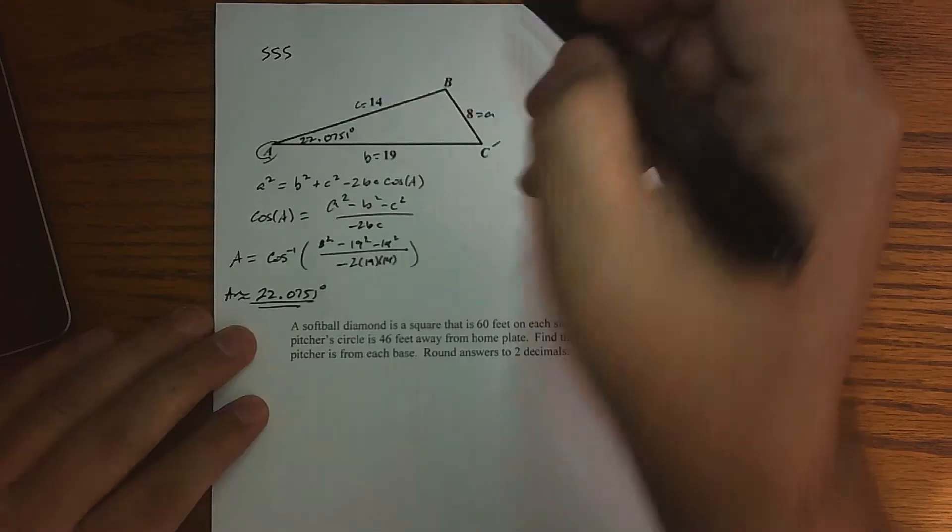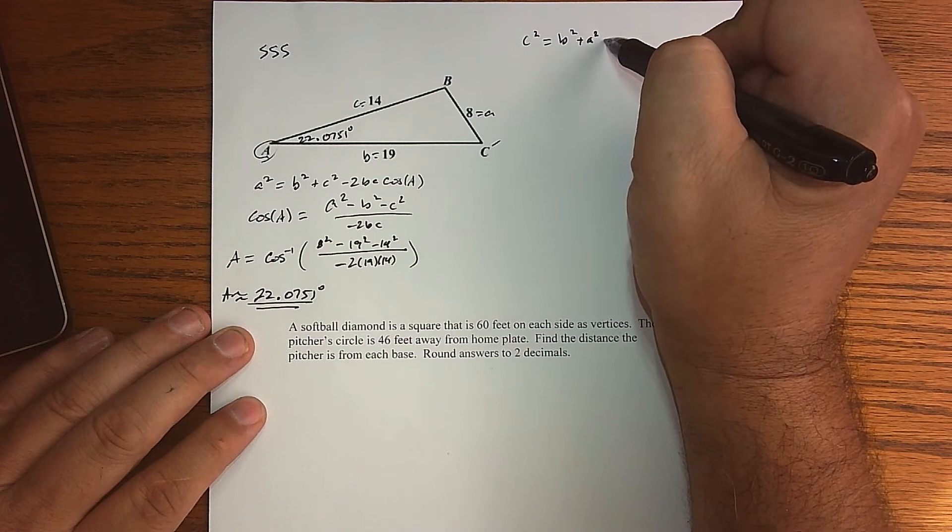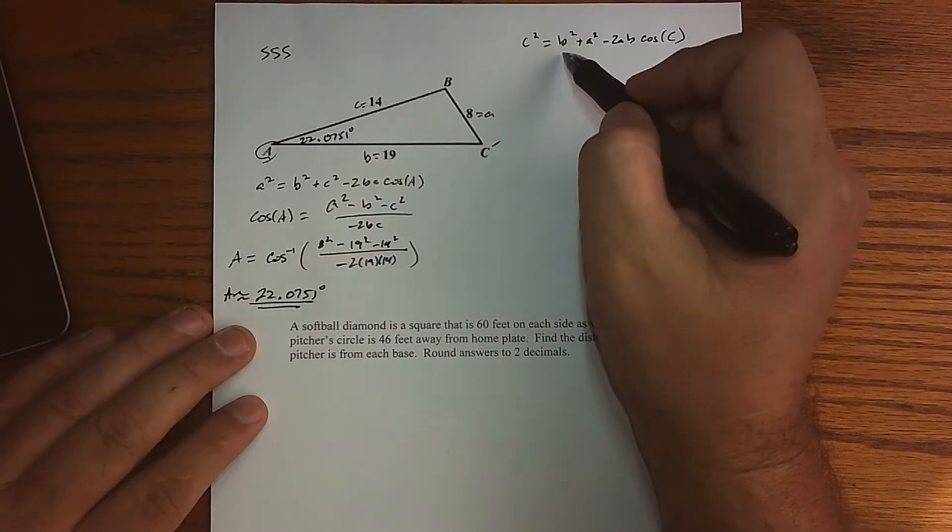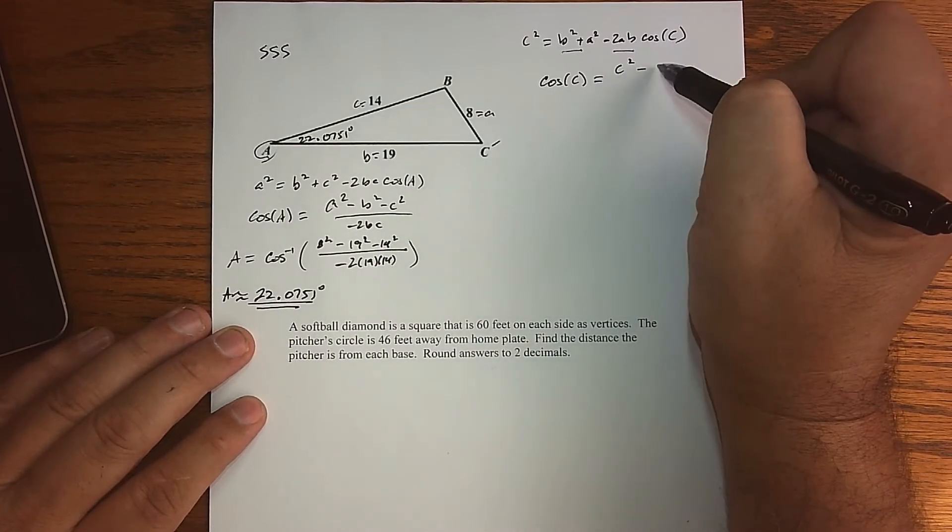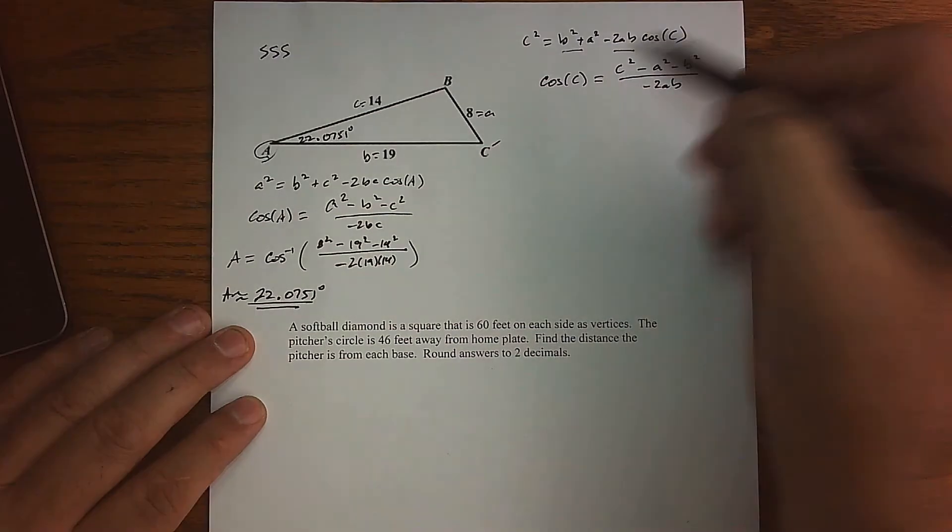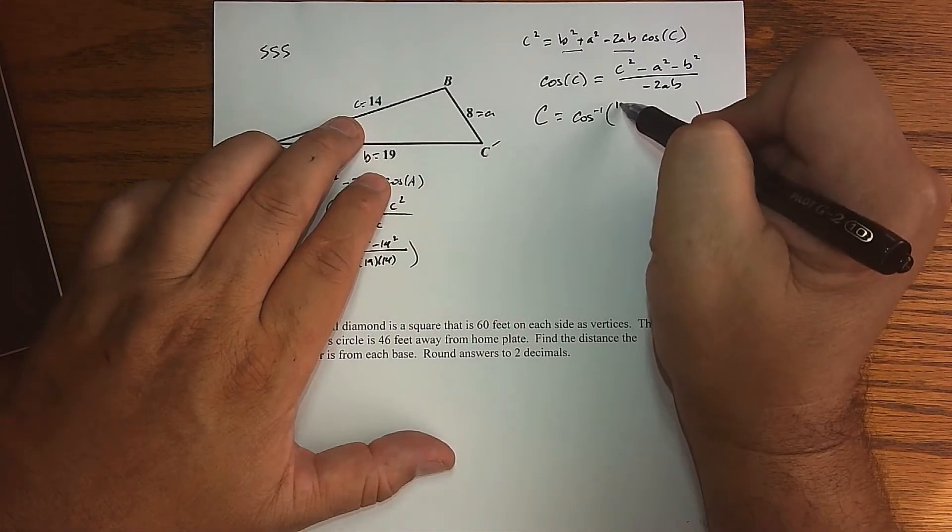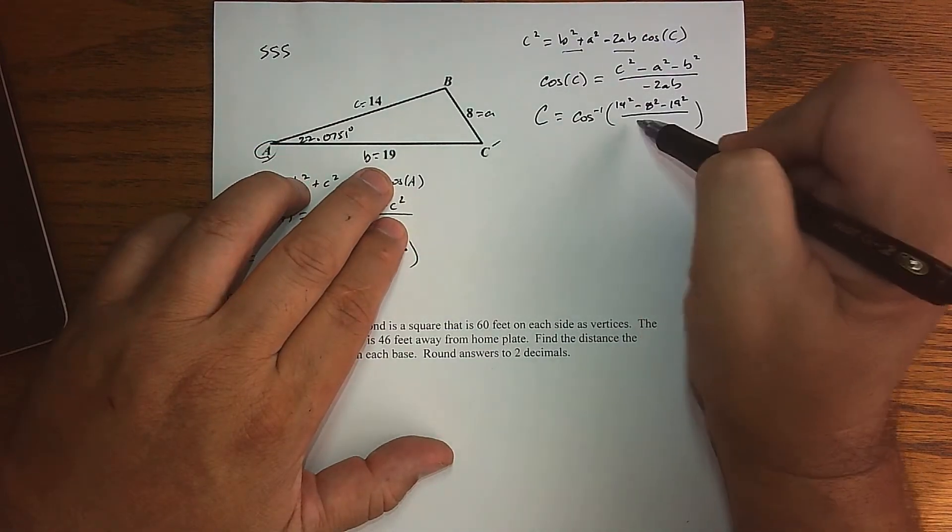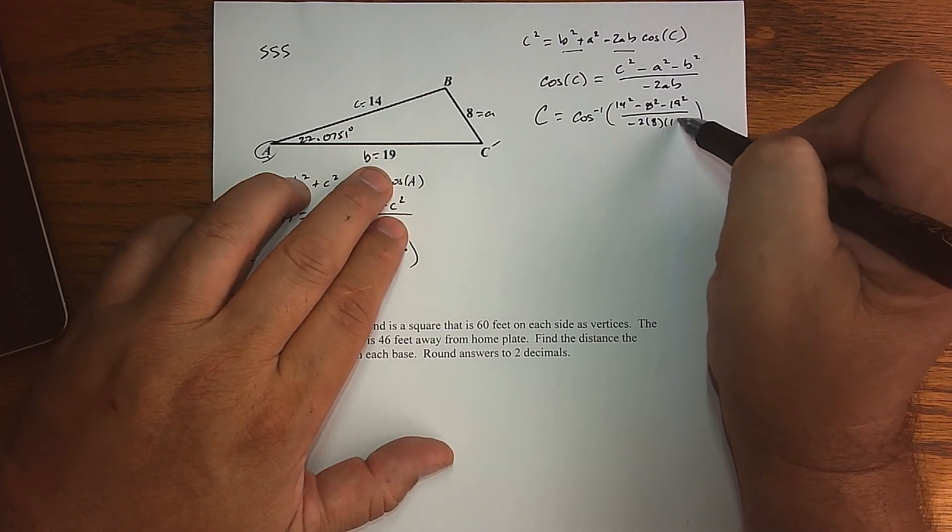So how about I do it for C? So C squared, right, is B squared plus A squared minus 2AB, the cosine of C. And then the math is going to be very similar. We're going to subtract that and divide by that. So cosine of C is C squared minus A squared minus B squared all over negative 2AB. And so our angle C is the inverse cosine, let's see, C squared, that's 14 squared, minus A, which is 8 squared, minus B, which is 19 squared, all over negative 2AB is 8, and B is 19.